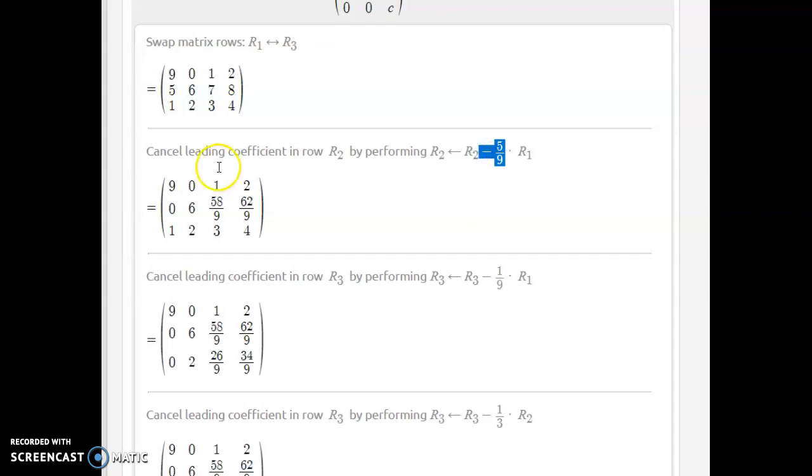It multiplies the first row with negative five ninths and adds that to the second one. Obviously here we get a zero right there. Here we just add zero because it happens to be one. Maybe that's why it did the row swap to begin with.